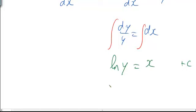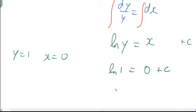And now we know our... We can use our limits again to get rid of this. So, when y is equal to 1, x is equal to 0. So, I can sub that in there. So, the natural log of 1 is equal to 0 plus c. The natural log of 1 is 0, so c is equal to 0.